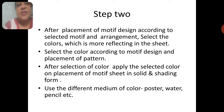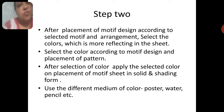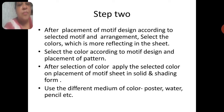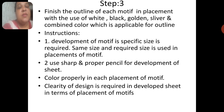After selection of color, apply the selected color on the placement of motif. If the sheet is in solid color and shading design, you can apply the right color accordingly. The outline of each motif in placement can be done with the use of white, black, golden, silver, or a combination of colors — whichever is applicable for the outline.